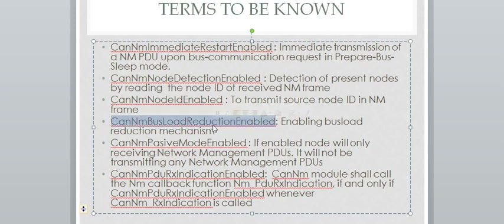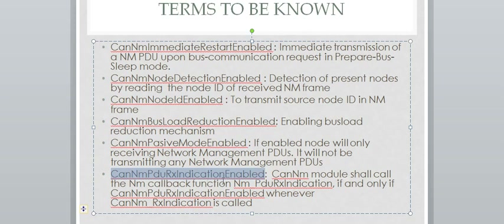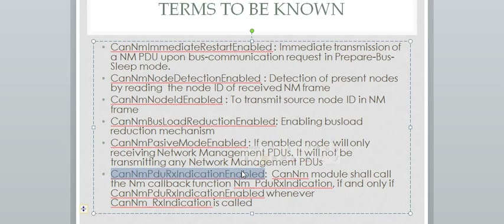Bus Load Reduction Mechanism: only if this tag is enabled will the bus load reduction mechanism be active. NM Passive Mode: a passive ECU is one that will only receive NM frames. If an ECU wants to be a passive ECU, CAN-NM Passive Mode Enabled should be enabled. CAN-NM PDU RX Indication Enabled: only if this is enabled will CAN-NM call the NM_PduRxIndication callback whenever CAN-NM-RX Indication is called, informing the NM module of NM frame reception.